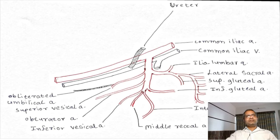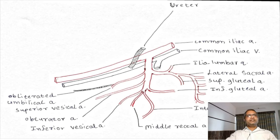Next one is middle rectal artery. This middle rectal artery, after its origin from the anterior division of this internal iliac artery, will go medially and downward towards the rectum, and it will supply the wall of rectum.